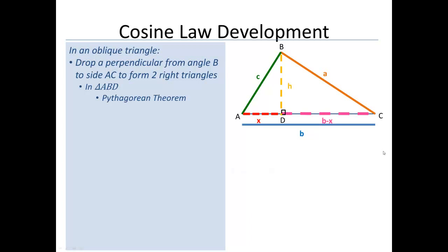But I'm going to write it in a different form. I'm going to write it in terms of H squared. So the one side squared is the hypotenuse squared minus the other side squared.